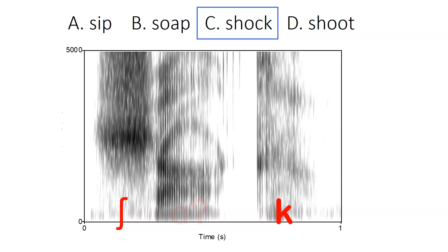In the word 'shock,' we have an AH vowel, so we would expect a relatively high F1 and an F2 close to it, which we have, as well as a visible voice bar because of the high F1, which we also have.